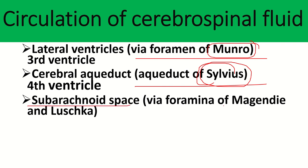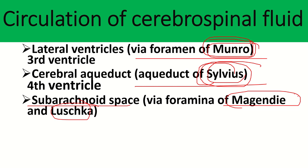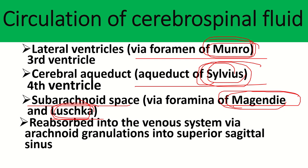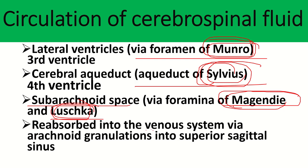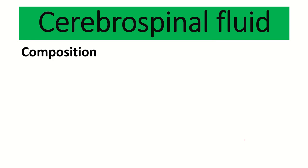From the fourth ventricle, CSF reaches the subarachnoid space via the foramen of Magendie and the foramina of Luschka. To summarize the four key openings: foramen of Monro, aqueduct of Sylvius, foramen of Magendie (midline), and foramina of Luschka (two lateral foramina). CSF is finally reabsorbed into the venous system via arachnoid granulations into the superior sagittal sinus.